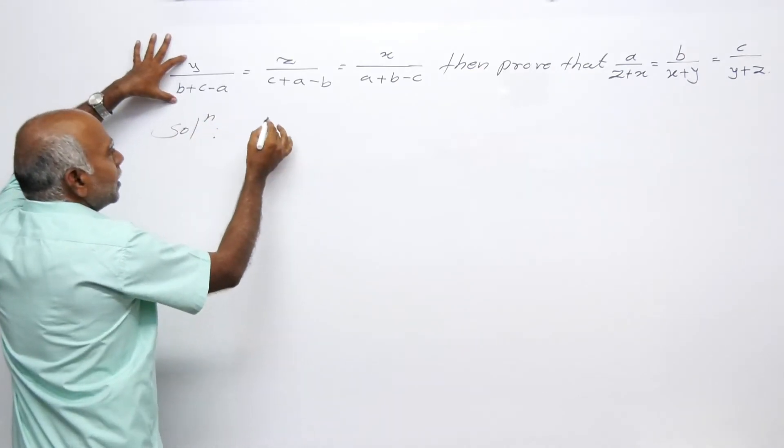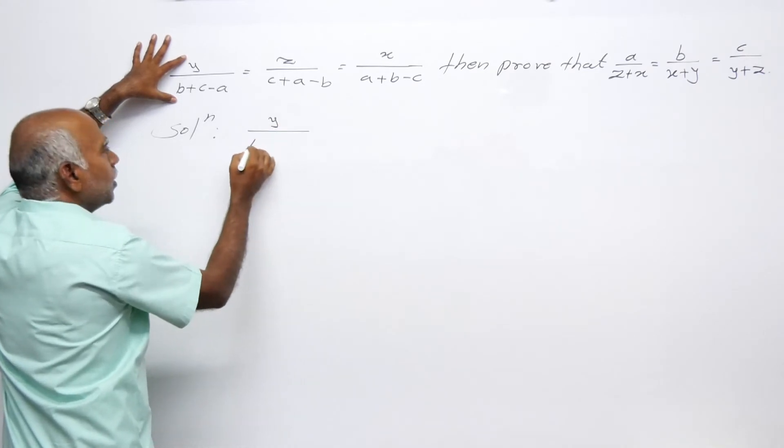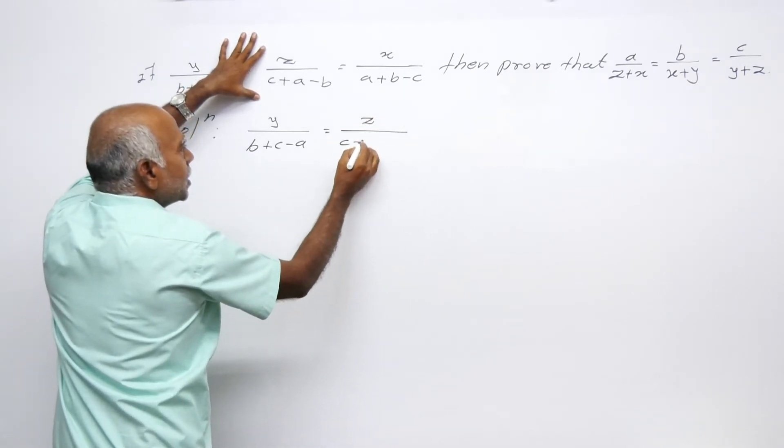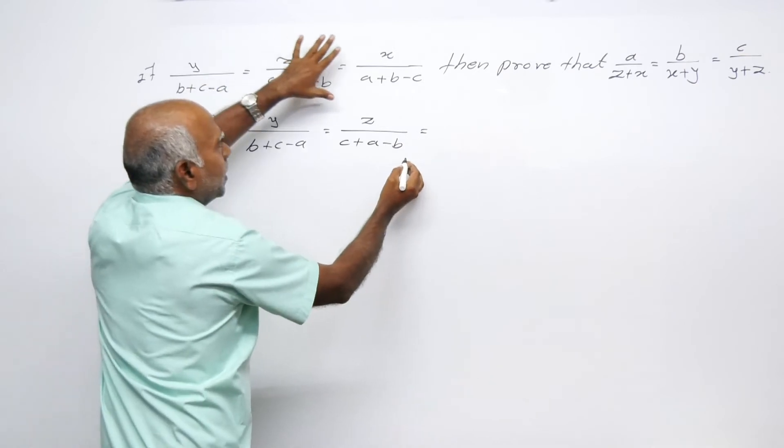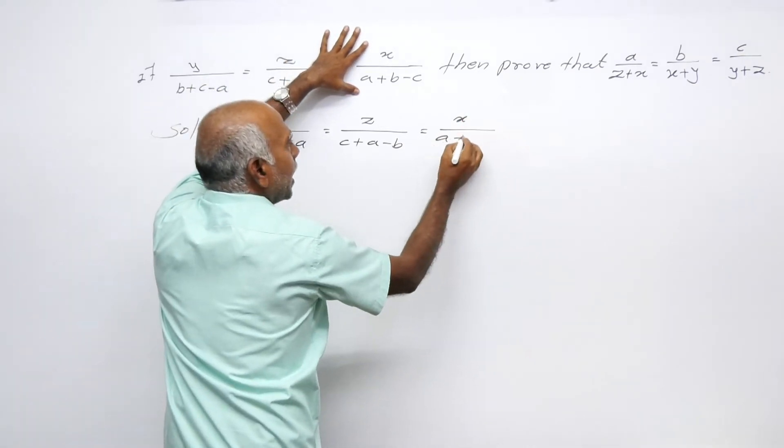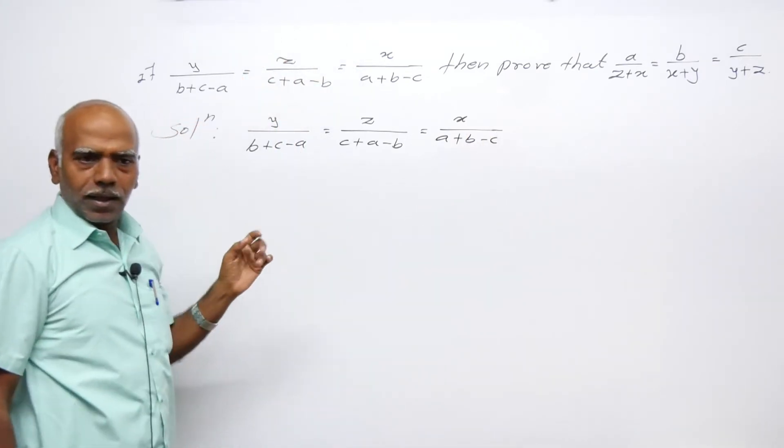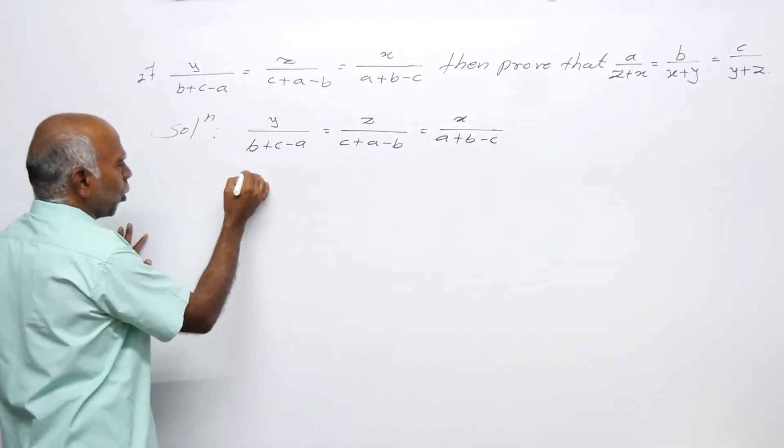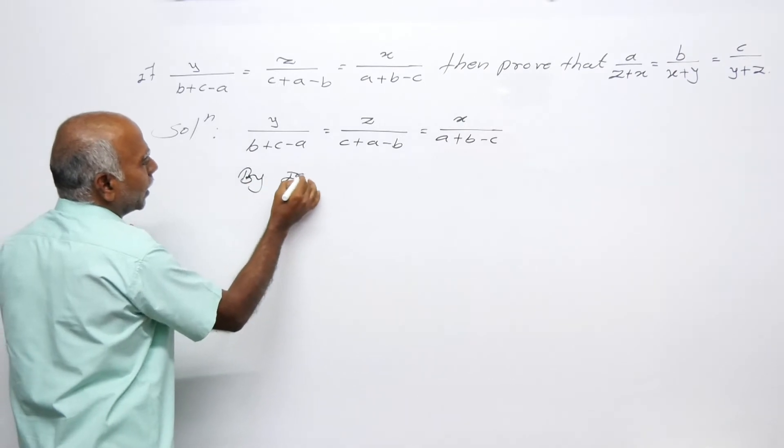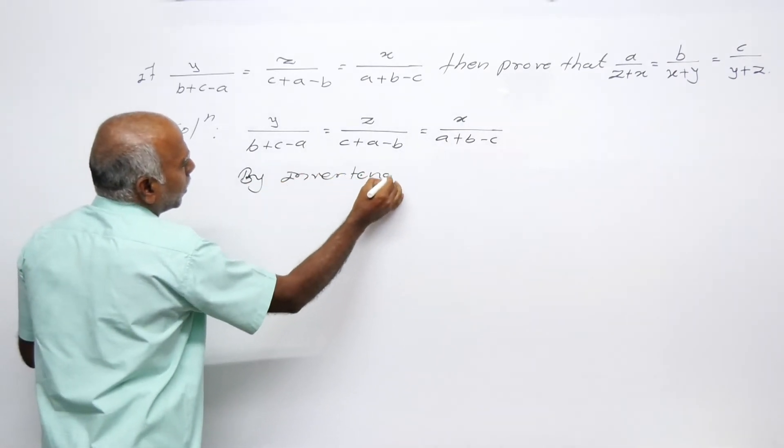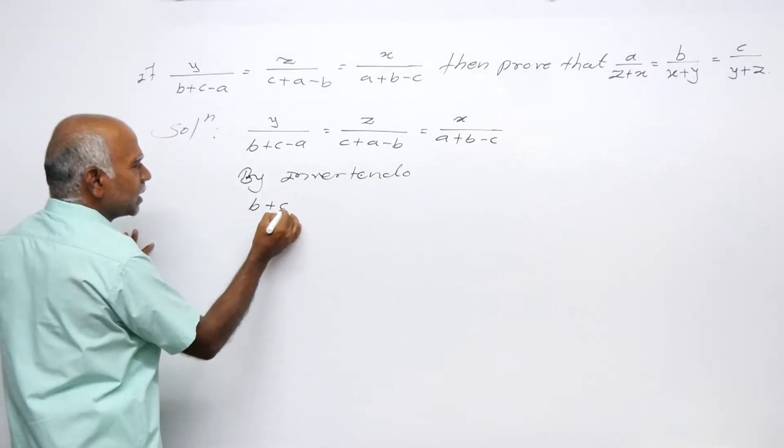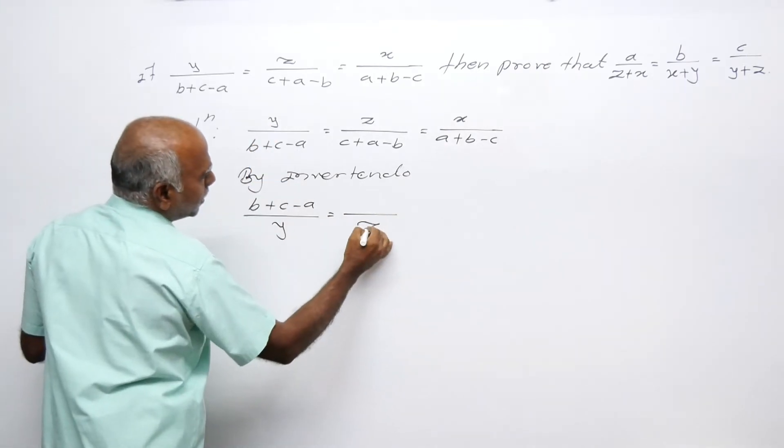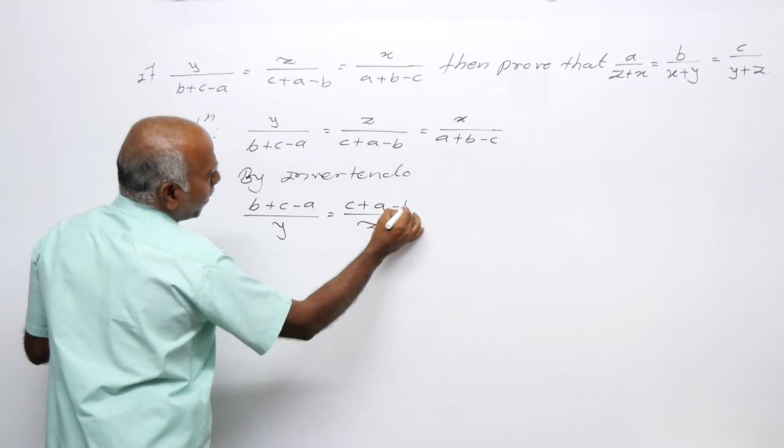First, let's calculate: y upon B plus C minus A equals z upon C plus A minus B equals x upon A plus B minus C. We can invert this over - by invertendo, B plus C minus A upon y